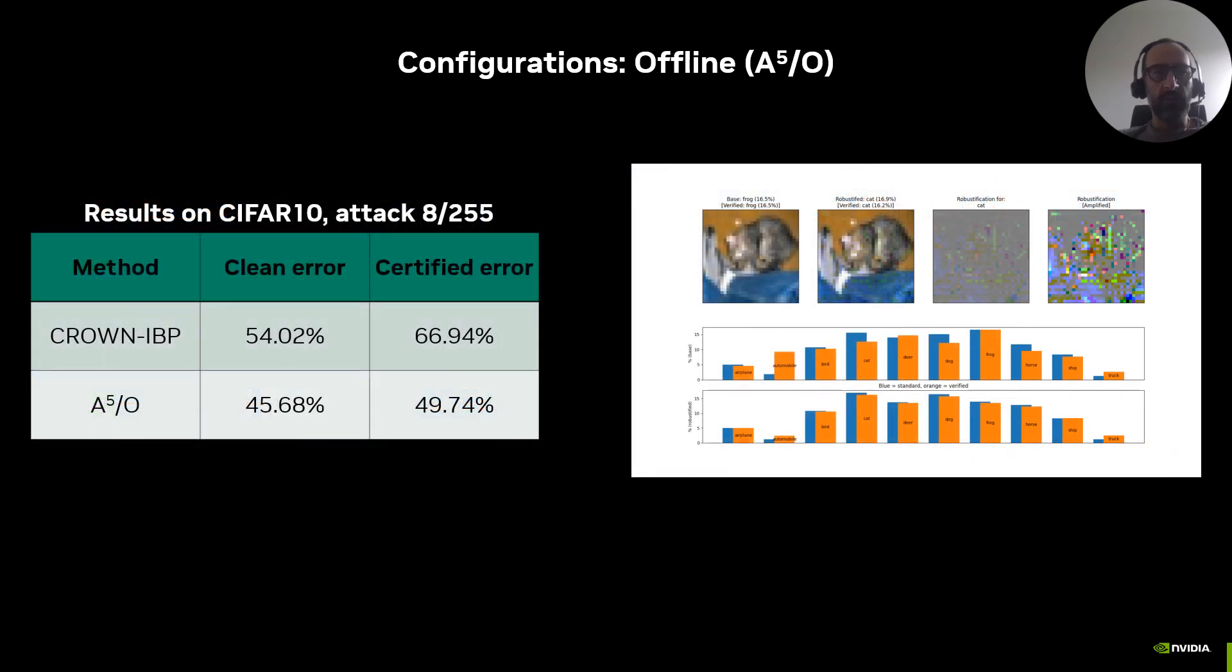The table shows the significant advantage of A5 in terms of clean and certified accuracy compared to the state-of-the-art CROWN-IBP. The image in the slide shows the defensive perturbation found by A5 that in this case leverages single pixel variations to increase the robustness. Notice that this kind of augmentation somehow resembles the adversarial attacks that exploit the irregularities and non-smoothness of the classification landscape of a classifier.